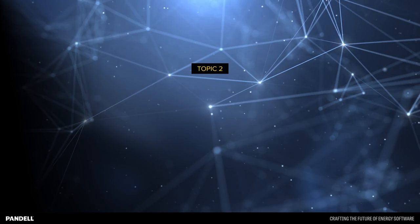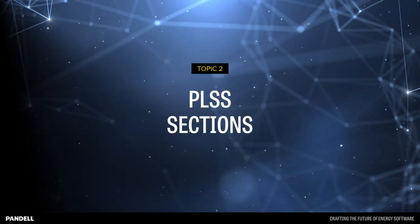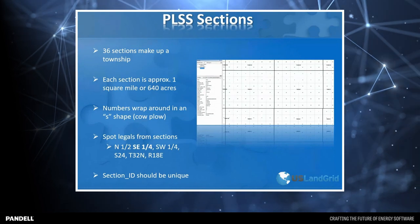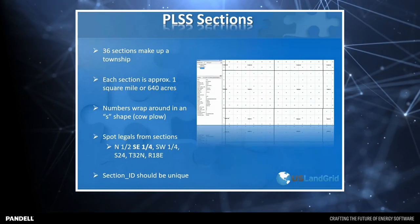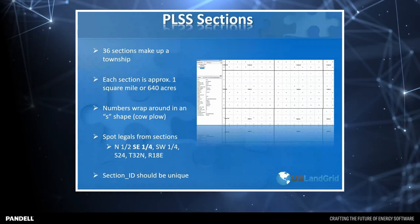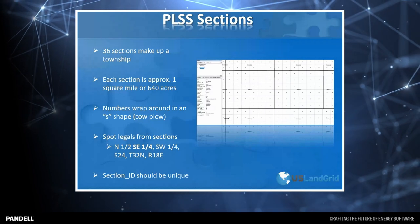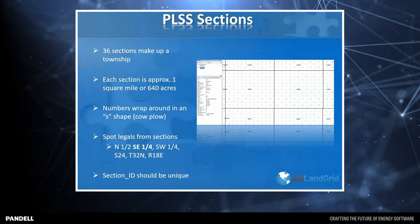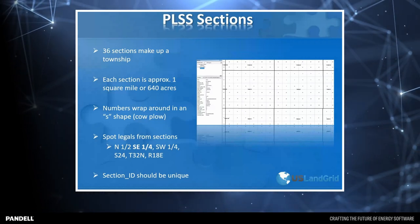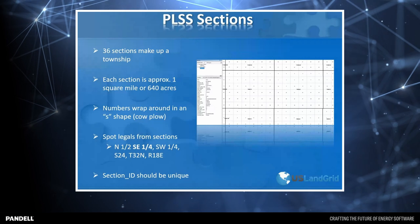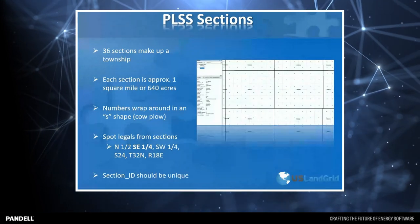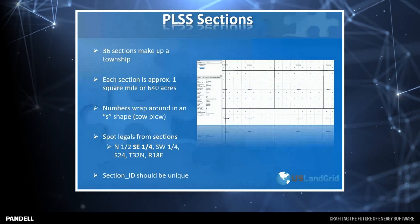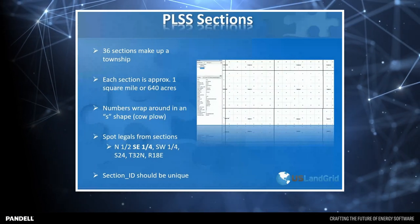In the public land survey system states — most of the states in the United States — you've basically got four main layers that you need to accurately map to your land grid: sections, townships, lots, and quarters. Sections are what I call the content king of the public land survey system, because it's really the basis for the PLSS land grid. It's where surveys really base their soul from. It's also content king because that's where most of the legal descriptions you deal with are referring — section corners, north halves of the south quarter, footage calls, or quarter calls.